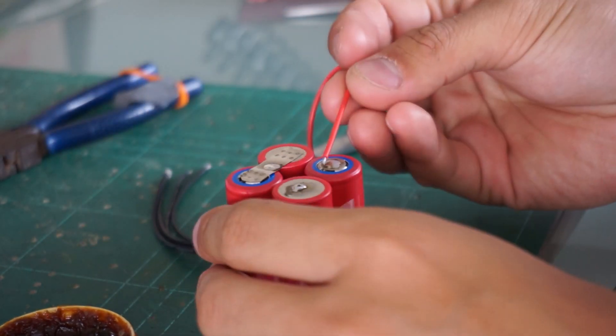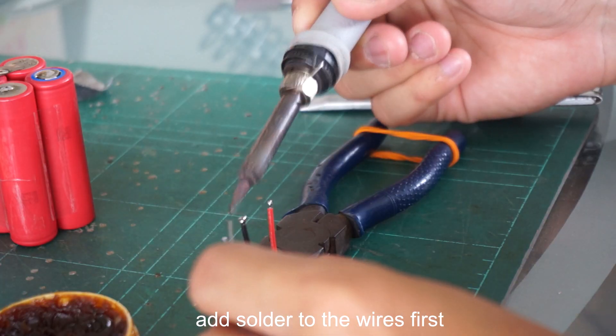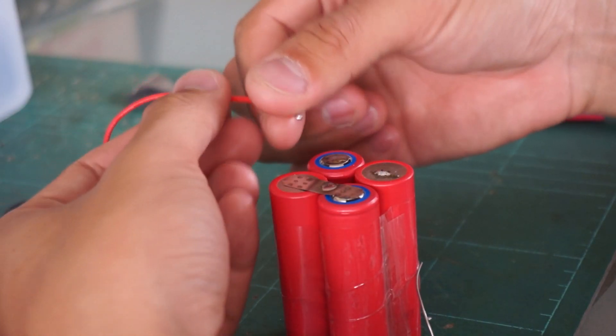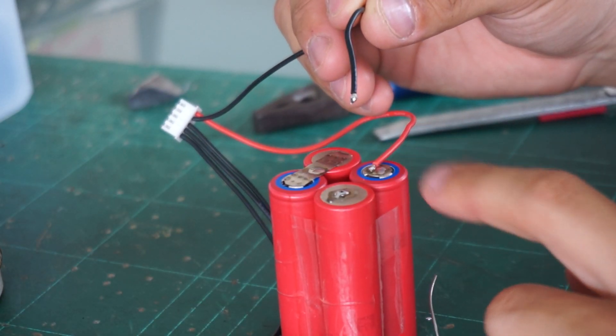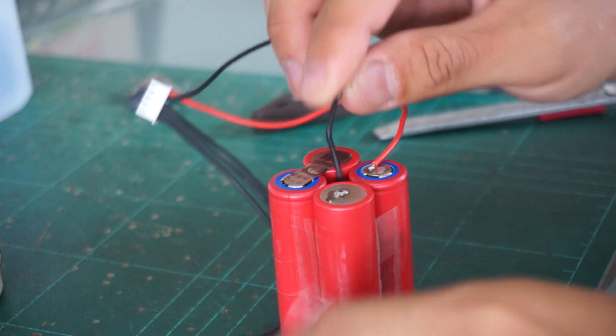I'll solder the positive first, but this one I'll cut it shorter. First the positive. Second lead goes to the negative side of the first battery, which is down here.